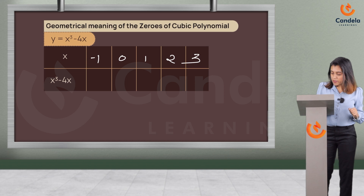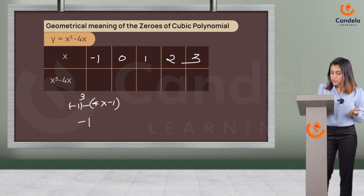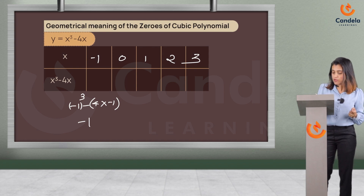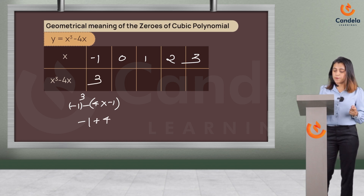y will be equal to (−1)³ minus 4 times (−1), which equals minus 1 plus 4, so it becomes 3.